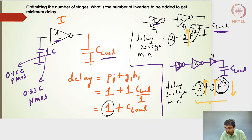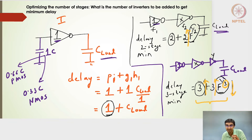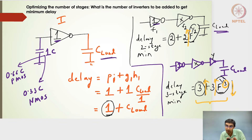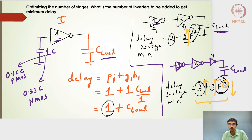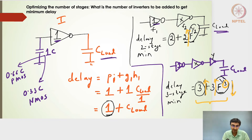There is clearly some minimum point in the delay as a function of the number of stages. It is not necessarily true that adding more inverters increases delay. Because of the F^(1/N) factor, there may be an optimum number of stages where the delay is minimized.